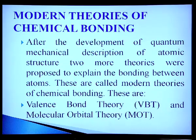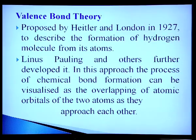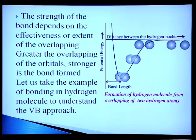We can now explain modern theories of chemical bonding. After the development of quantum mechanical descriptions of atomic structure, two theories were proposed: Valence Bond Theory (VBT) and Molecular Orbital Theory (MOT). Valence Bond Theory was proposed by Heitler and London in 1927 to describe the formation of the hydrogen molecule. It was further developed by Linus Pauling and others. In this approach, chemical bond formation is visualized as the overlapping of atomic orbitals as two atoms approach each other. The strength of the bond depends on the effectiveness of overlapping — greater overlap gives a stronger bond.